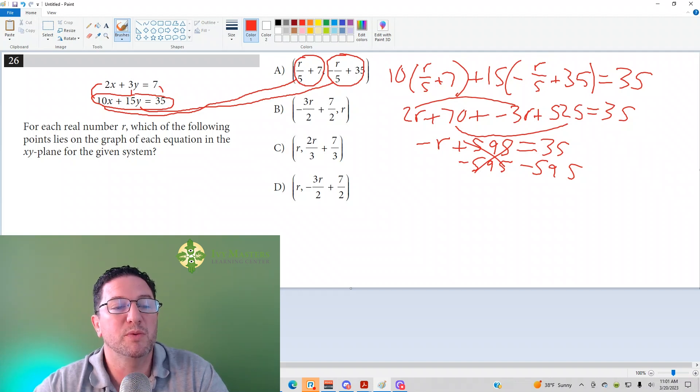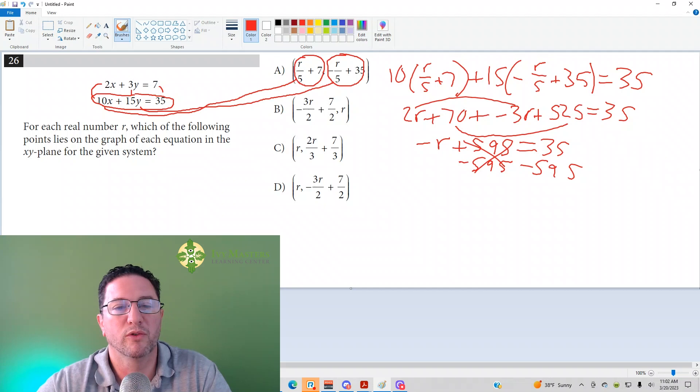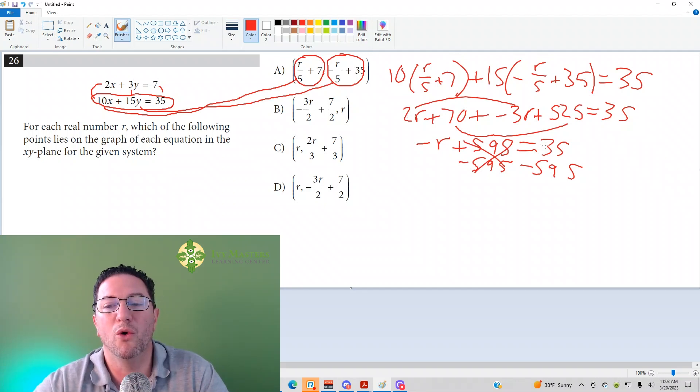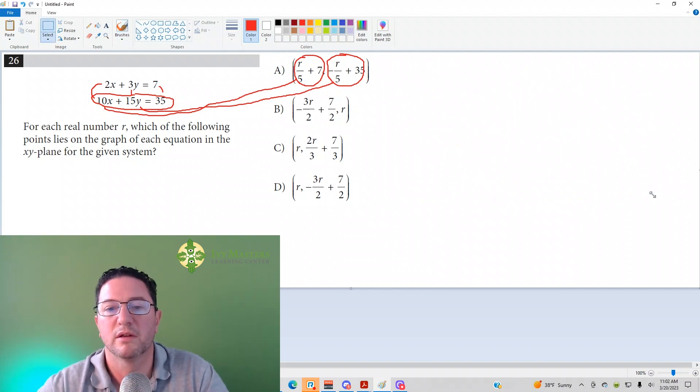Well, since we have infinitely many solutions here, the solution should give us something like R equals R, or 1 equals 1, or negative 4 equals negative 4. It should be something that is always true, not based on just one particular value of R. So I'm going to erase what we've got here. And we're going to work it out with this second coordinate.